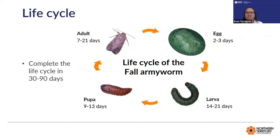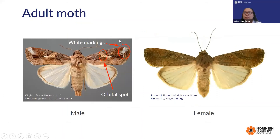The next stage is the pupal stage — the pupa is reddish brown and about 15 to 20 mm. Usually pupation takes place in the soil, but it has also been observed on maize cobs. The moth emerges from the pupa and has a wingspan of 32 to 40 mm. Male and female moths differ strongly: females have less distinct wing markings ranging from uniform grayish brown to fine mottling of gray and brown, while the forewings of males are mottled gray and brown with orbital spots and triangular white spots at the tip near the center of the wing.